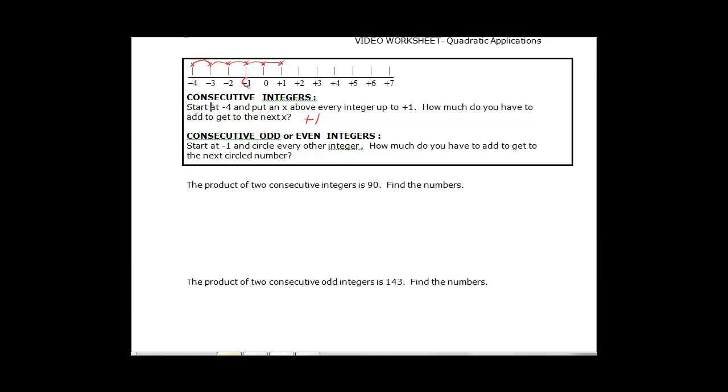So we start here at negative 1 and we skip every other. So we skip the 0, go to 1, skip to 2, go to 3, skip to 4, go to 5, skip to 6, go to 7. Notice those are all odd numbers and to get from one to the next we had to add 2.